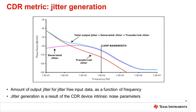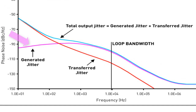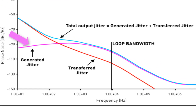Jitter generation is a measure of the periodic jitter intrinsic to the CDR device. Similar to jitter transfer, the amount of jitter generated as a function of frequency depends on the CDR loop bandwidth. Jitter generation is driven by intrinsic noise parameters such as thermal noise, BJT noise, or MOSFET flicker noise. The CDR total output jitter is equal to the jitter transfer plus the jitter generated.